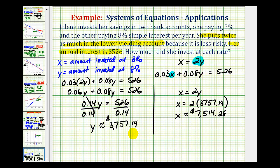So to answer the question, Jolene invested 3,757 dollars and 14 cents at 8% simple interest and 7,514 dollars and 28 cents at 3% simple interest.